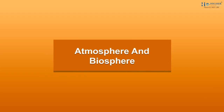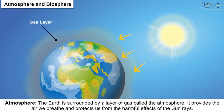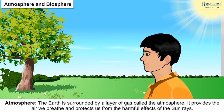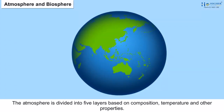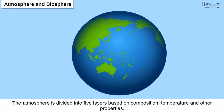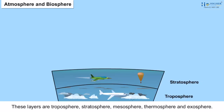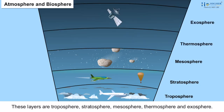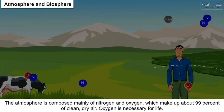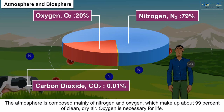Atmosphere and Biosphere. The Earth is surrounded by a layer of gas called the atmosphere. It provides the air we breathe and protects us from the harmful effects of the sun's rays. The atmosphere is divided into 5 layers based on composition, temperature and other properties. These layers are the troposphere, stratosphere, mesosphere, thermosphere and exosphere.